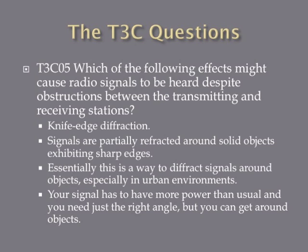Which of the following effects might cause radio signals to be heard despite obstructions between the transmitting and receiving stations? The answer is knife-edge diffraction. This happens when signals are partially refracted around solid objects exhibiting sharp edges. This especially happens in urban environments where you have buildings and other types of things with sharp corners. Your signal needs to have a good amount of power, at least a little bit more than usual, and you need to be just at the right angle, but you can shoot a UHF or VHF signal around objects in an urban environment.